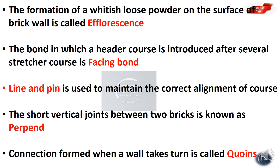The formation of a whitish loose powder on the surface of a brick wall is called efflorescence.